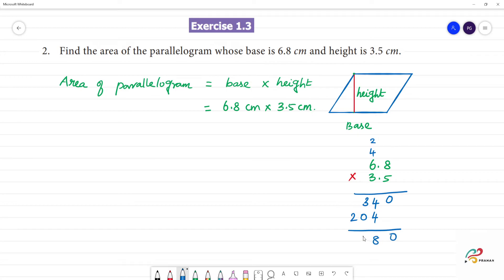0, 8, 3, 2. How many decimals? Here is 1 decimal. How many decimals total? Here is 1 decimal. So total are 2 decimals. 2 decimals.